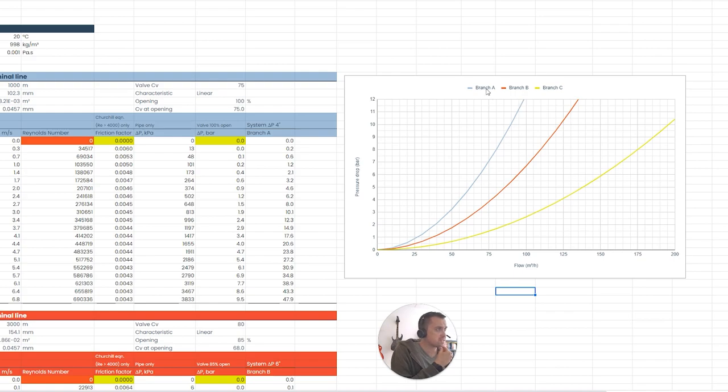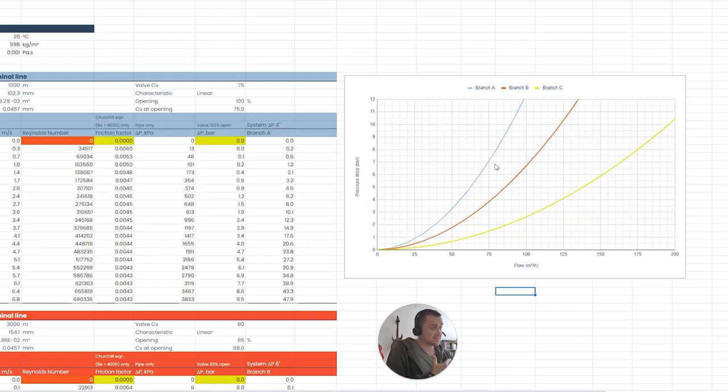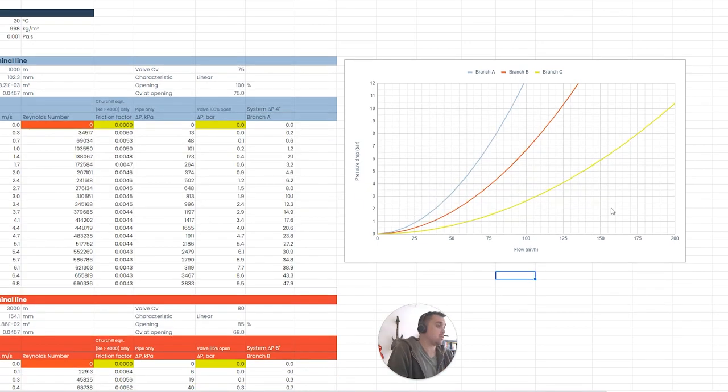It should be no surprise that branch A, which is the four inch line, remember it's blue is four inch, red is six inch, yellow is eight inch. The blue inch line has the steepest system curve because it is the most difficult to pass flow through it. Anyways, these are the three system curves of three branches in parallel, each taken individually, so we haven't put them in parallel yet.